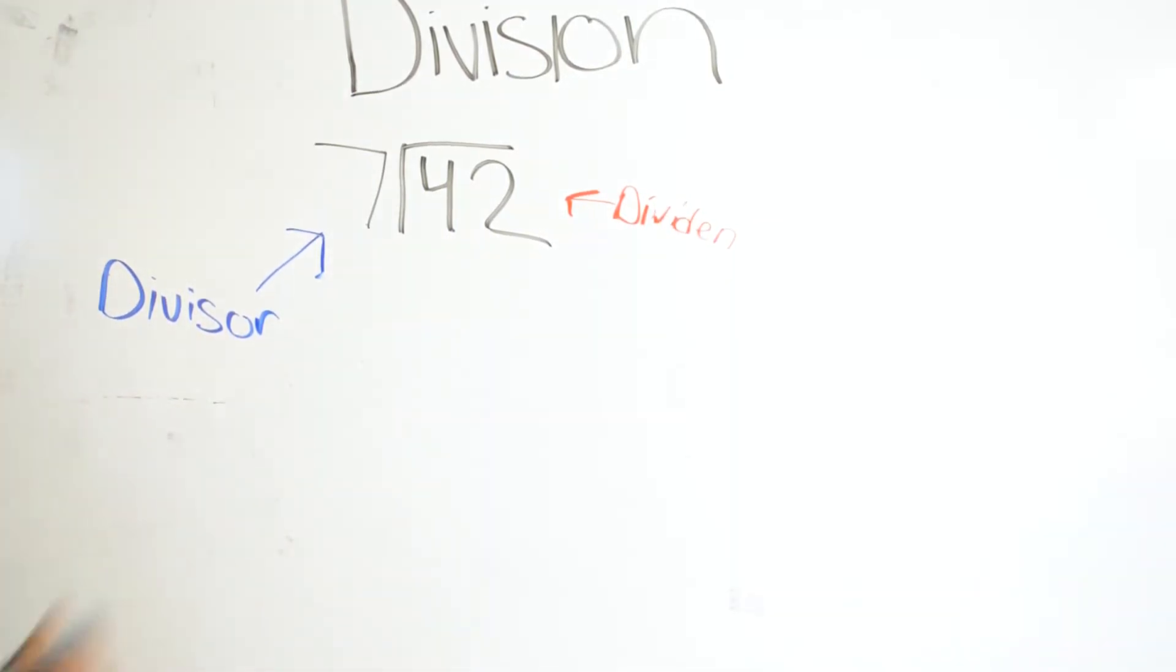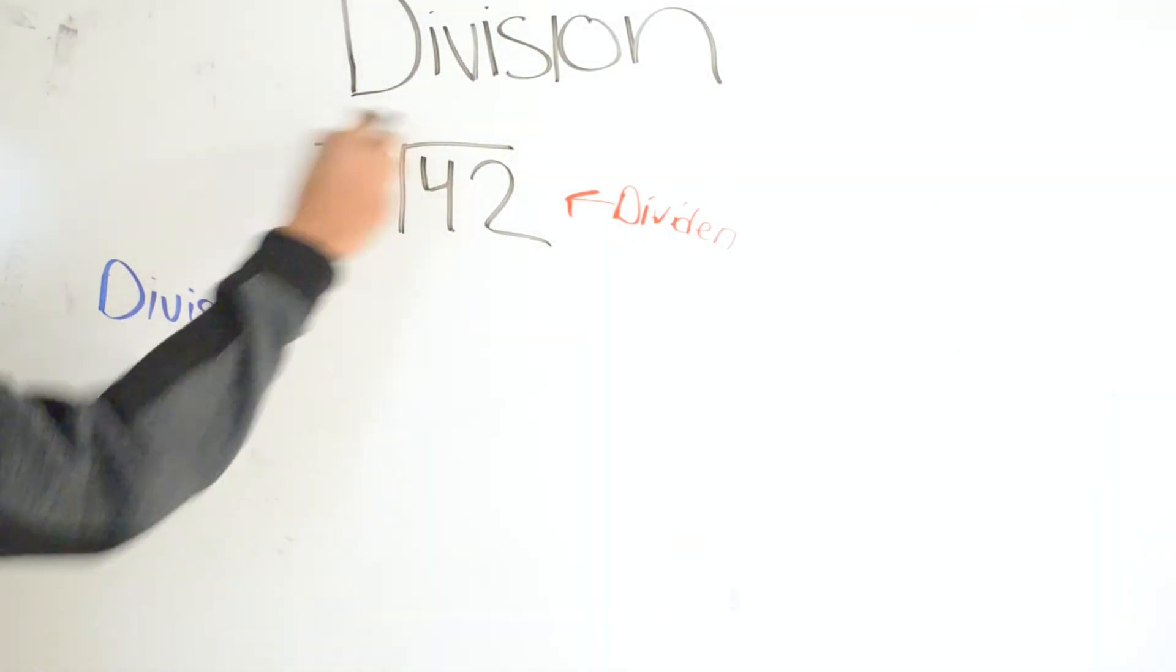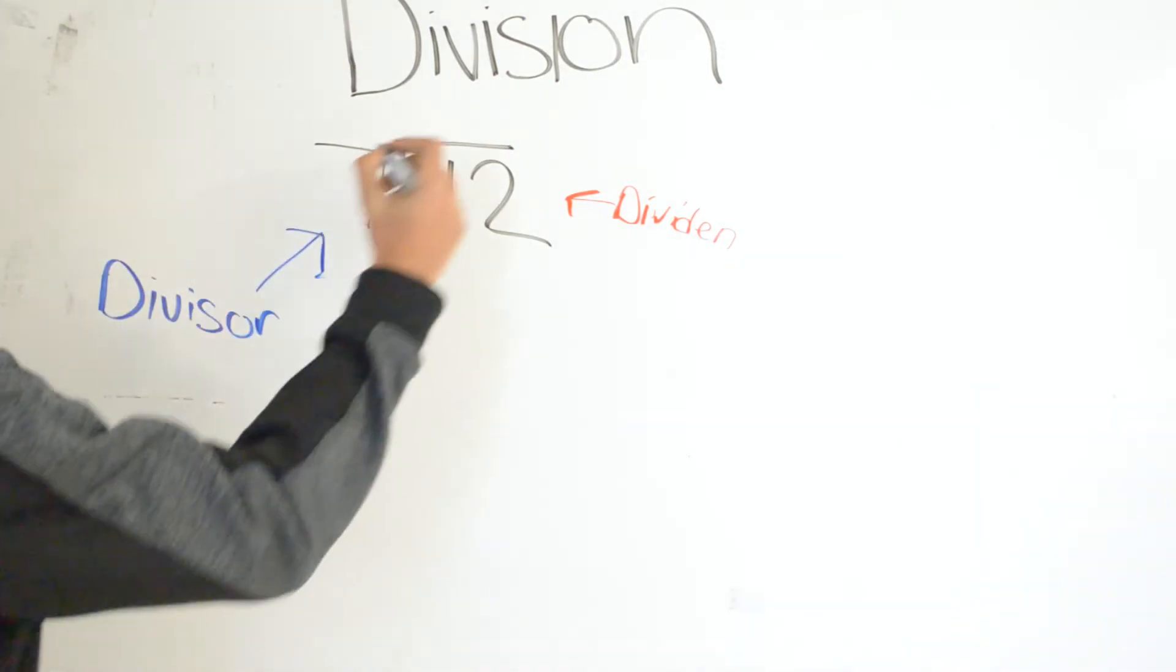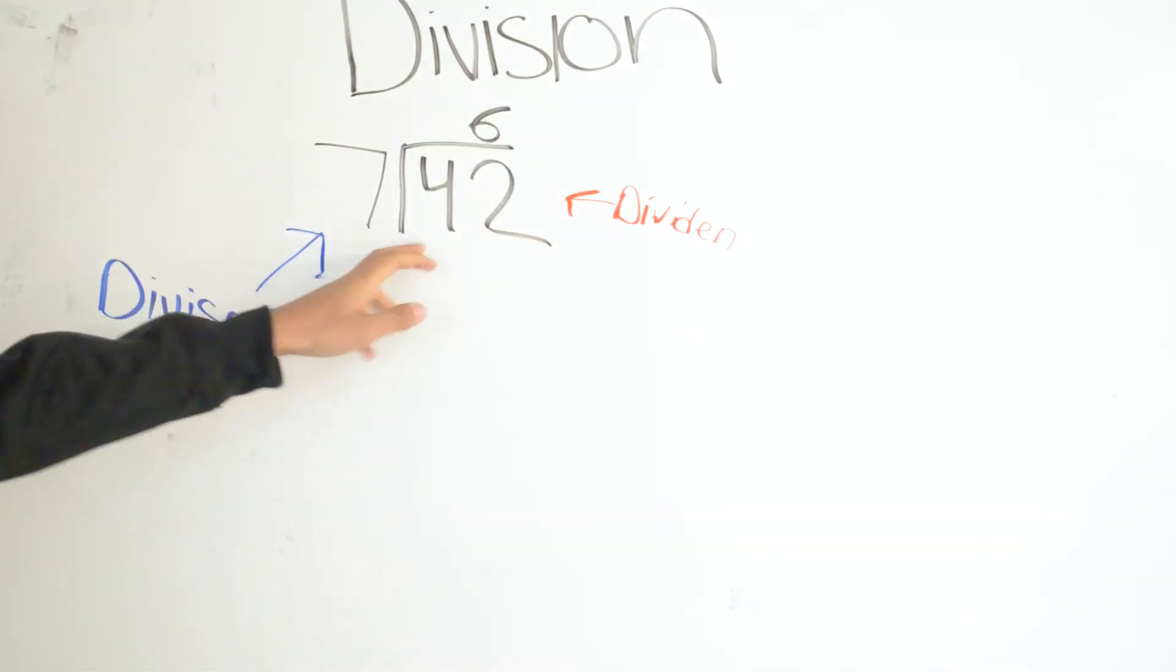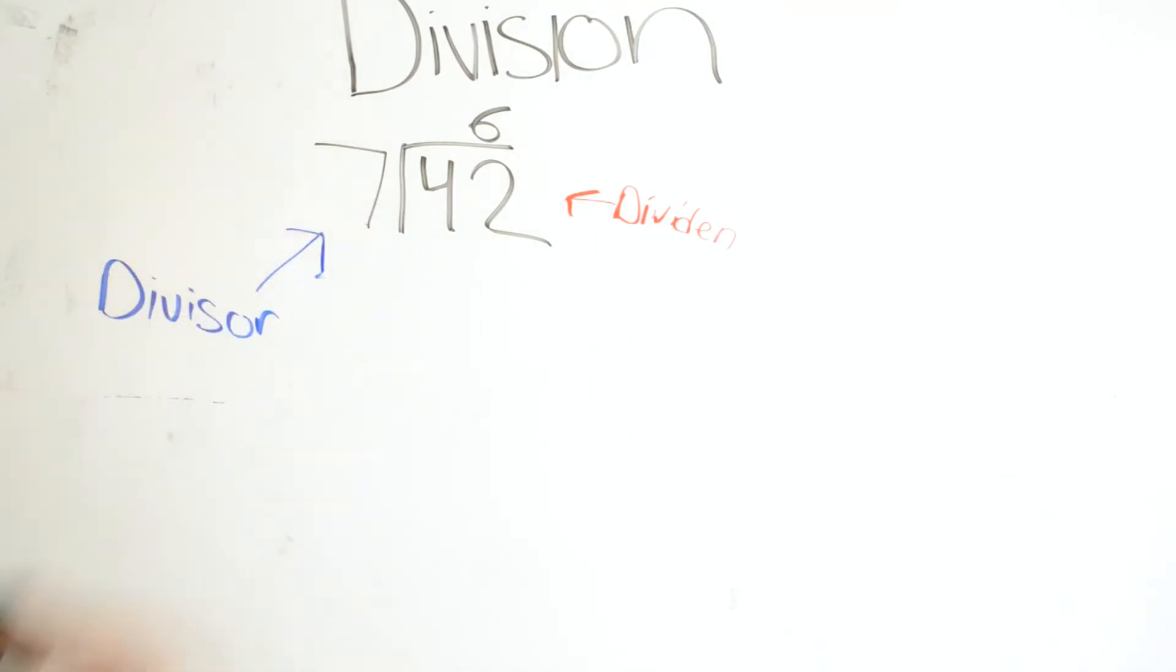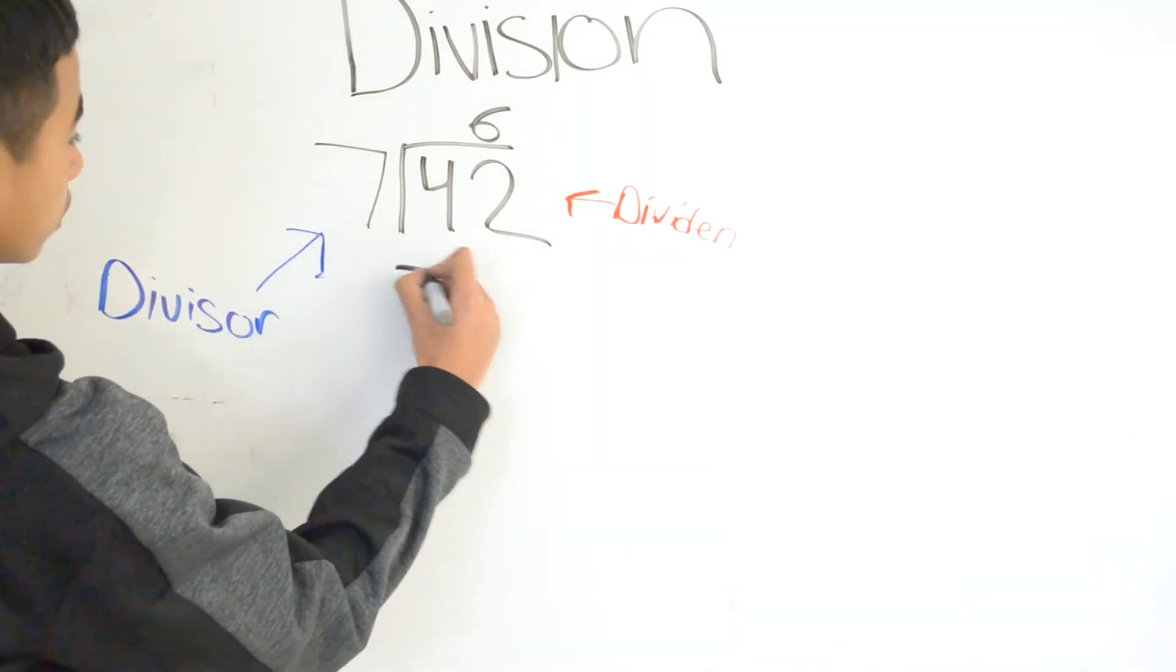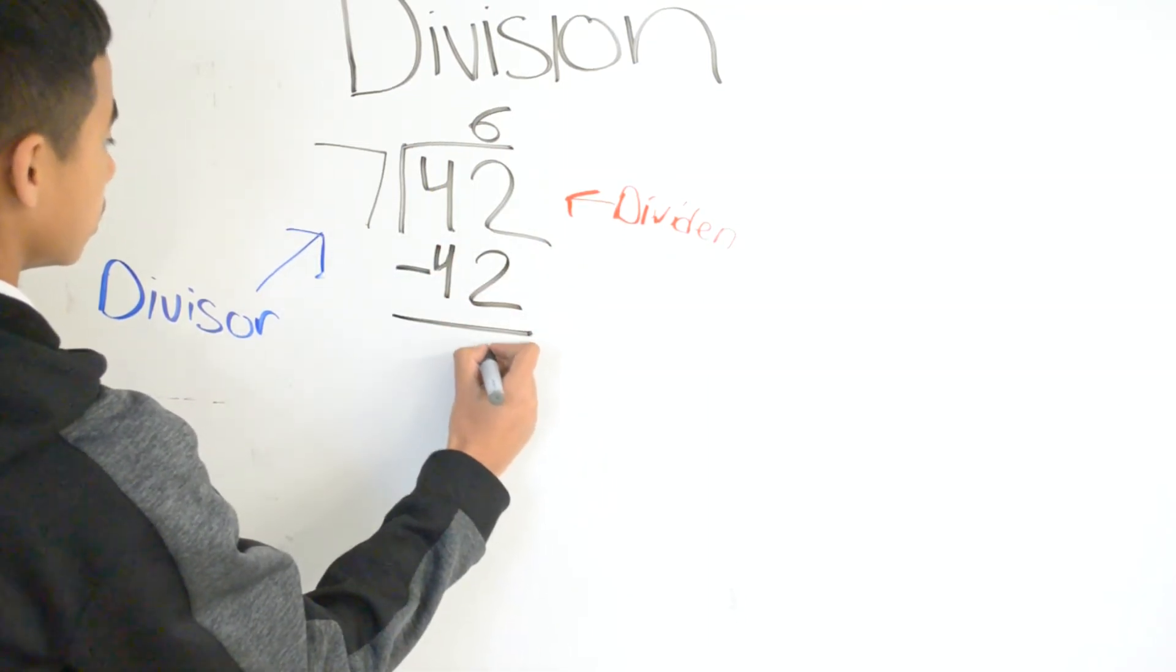7 goes into 4 zero times, so we leave it like that. But 7 does go into 42 six times, because 7 times 6 is 42. So write 6 on top of the 2, on top of the last number, because 7 goes into 42, it does not go into 4. So 7 times 6 is 42. We subtract 42 minus 42 and get 0.